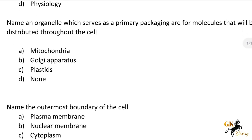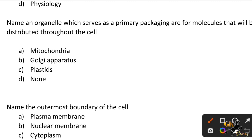Next question: Name an organelle which serves as a primary packing organelle for molecules that will be distributed throughout the cell. Option A: Mitochondria. Option B: Golgi apparatus. Option C: Plastids. Option D: None of the above. The correct answer is Option B: Golgi apparatus.